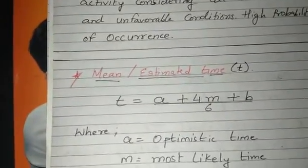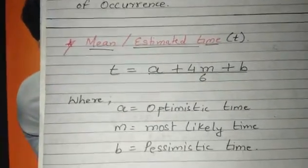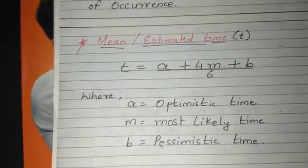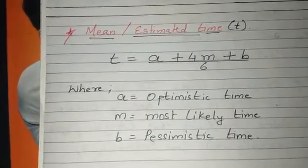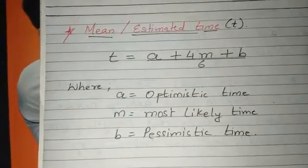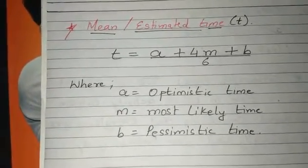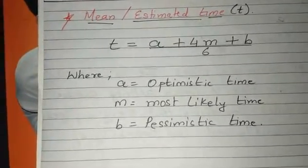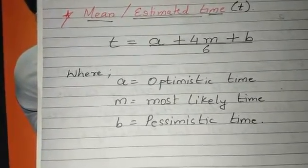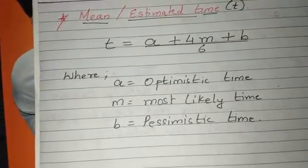All these three times would be given in the question, and for that we would now find out mean or estimated time. It has a formula: t = (a + 4m + b) / 6, where a is optimistic time, m is most likely time, and b is pessimistic time.